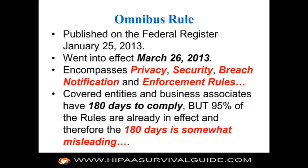The omnibus rule was published in the Federal Register on January 25, 2013 and went into effect March 26, 2013. It encompasses the privacy rule, security rule, breach notification rule, and the enforcement rules. A lot of these rules — breach notification and enforcement — were interim final rules that were already law, so the omnibus rule really just wrapped it up and promulgated the final rules. Enforcement started with the interim final rules; the term 'interim' is a misnomer because that is good law.